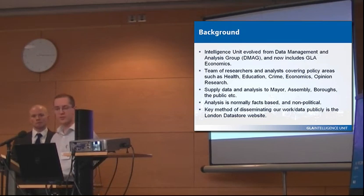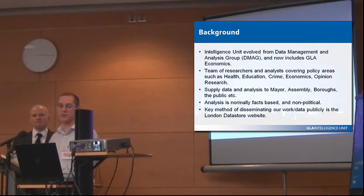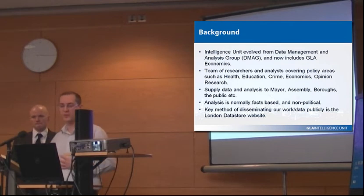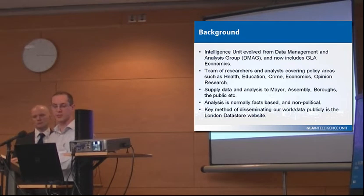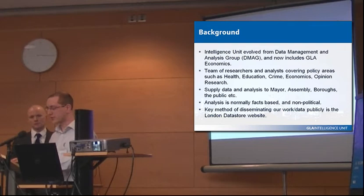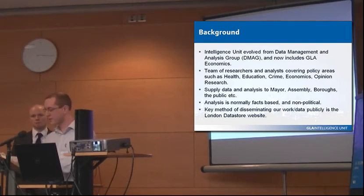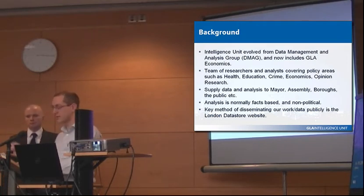I'll give you a background to who we are. The Intelligence Unit, which is where we work, is made up of the Data Management and Analysis Group, or DMAG, as some of you might have come across in the past — especially people from London. We also incorporate GeoEconomics, and there are about 40 staff in the unit. Only about 5 of the 40 use the Atlas in terms of putting reports together. We're a team of researchers and analysts covering lots of different policy areas including health, education, crime, economics, and research. I work in general statistics, in the crime data team.